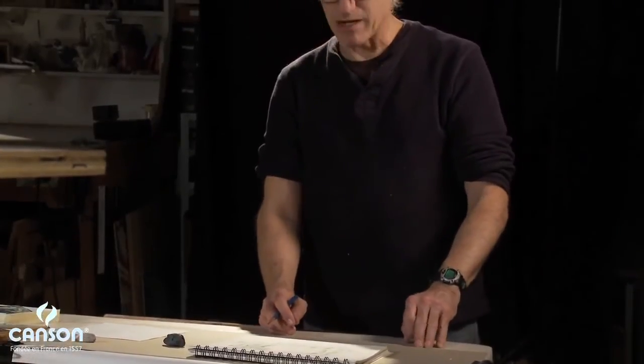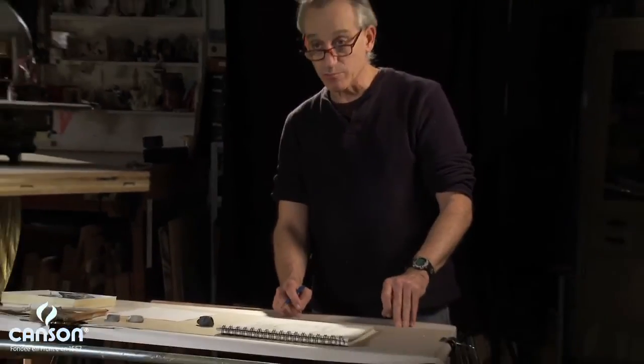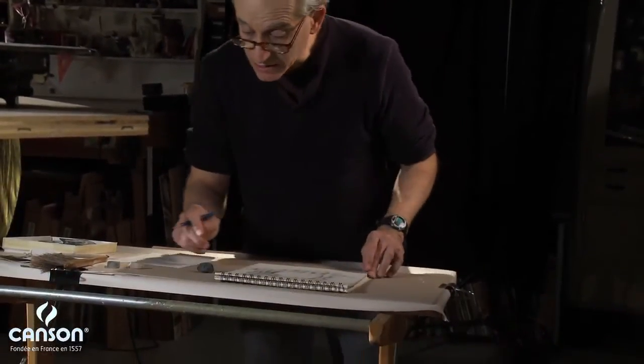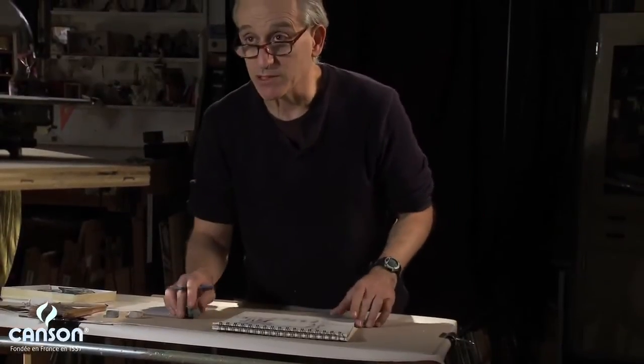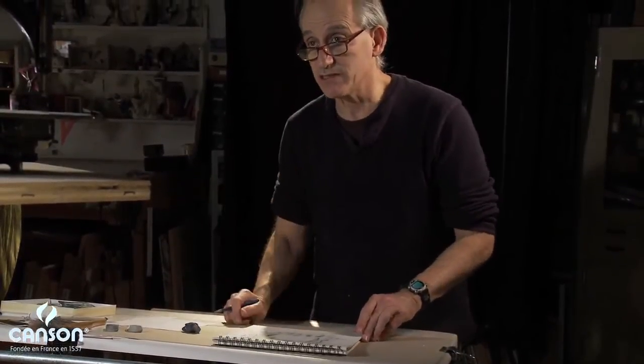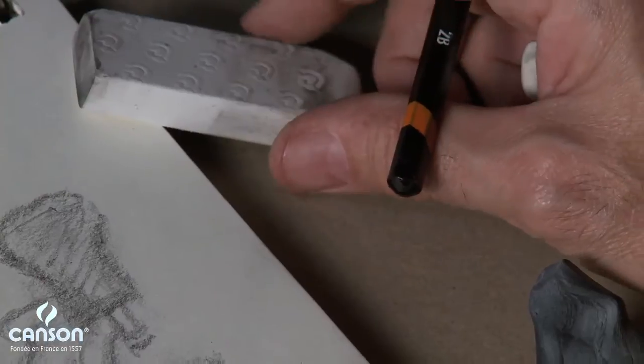We really should go back and think about where are the highlights? Where are the brightest lights on the form? And as I'm erasing those out, I'd like to get something a little sharper to suggest the metallic surface. Take a bit of plastic eraser.